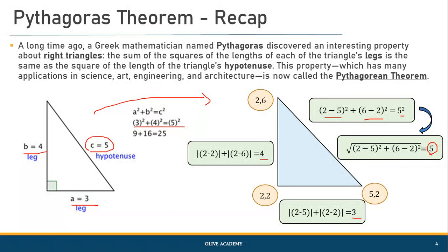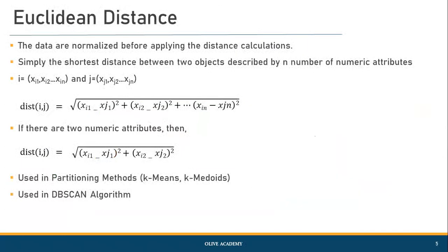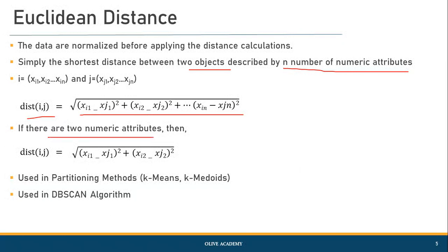This is Pythagoras theorem, and the same value is given by Euclidean distance, because Euclidean distance uses the same formula — the shortest distance between two different points in a two-dimensional or n-dimensional space. For n attributes, the formula is: √[(xi1−xj1)² + (xi2−xj2)² + ...].